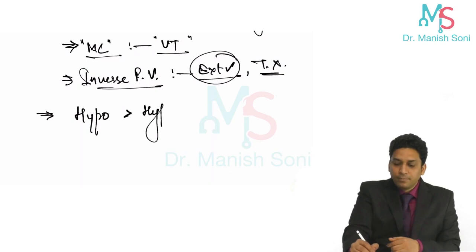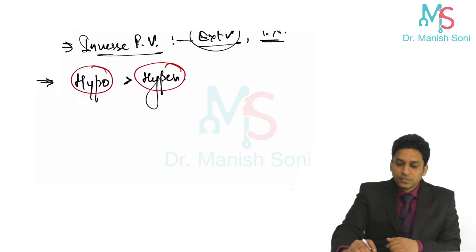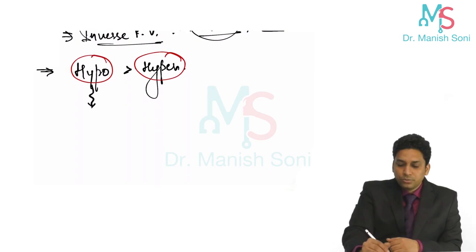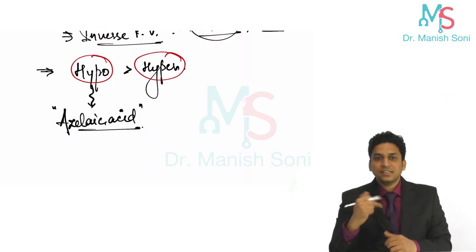The questions which are asked here is why the lesions are hypopigmented or hyperpigmented. You can remember two points. First, this hypopigmentation is due to azelaic acid secreted by this yeast. If you recall while discussing treatment of melasma, I told you azelaic acid is a tyrosinase inhibitor. It inhibits melanin synthesis and that is why the lesions are hypopigmented.